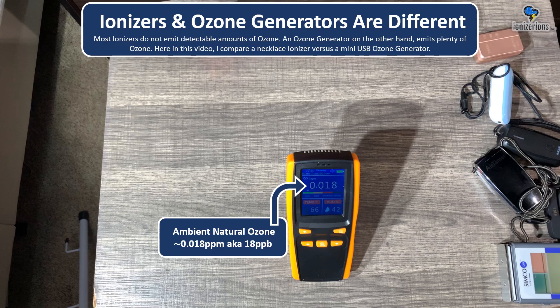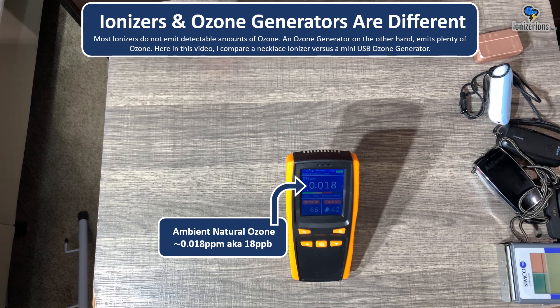Ionizers and ozone generators are different. Most ionizers do not emit detectable amounts of ozone. An ozone generator, on the other hand, emits plenty of ozone. Here in this video, I compare a necklace ionizer versus a mini-USB ozone generator.